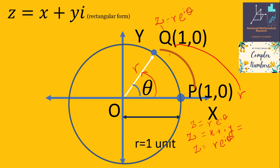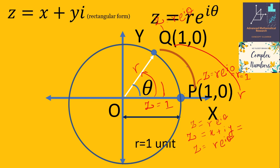At point Q, point P has moved by an angle theta. When we write z = r·e^(iθ), theta here is initially zero, so e^(i·0) = 1, giving us r, and r equals 1. When this complex number 1 is rotated by an angle theta, we represent it as z = r·e^(iθ), meaning r has rotated by angle theta.